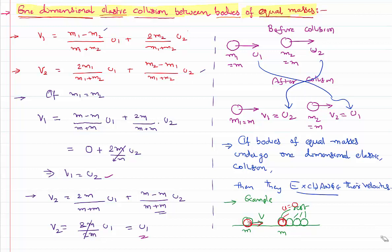Now the second body will go and collide with the third body. The second body's velocity v is given to the third body, and the third body's velocity zero is taken by the second body. Like that, the transfer keeps on happening — all intermediate balls end up with velocity zero, and this last body gets the velocity of the first body. Transfer of velocities happens between bodies of equal masses in one-dimensional elastic collision — each pair of bodies simply exchanges their velocities.